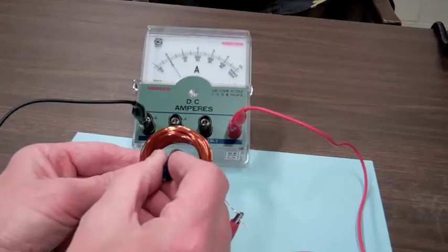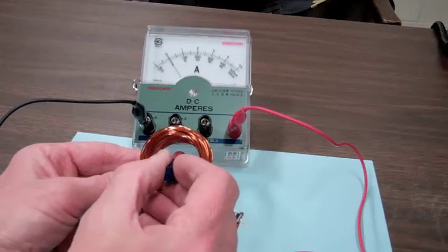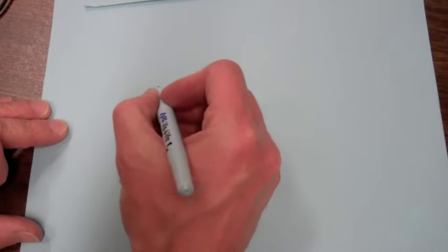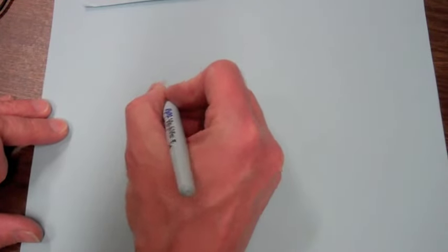Ok, so the rate of change of the magnetic field affects the current also. We saw that as the number of turns in the coil increased, the current increased.